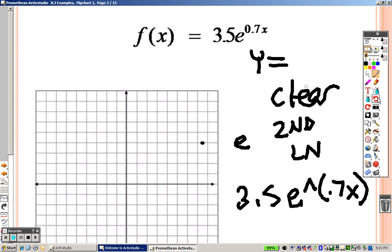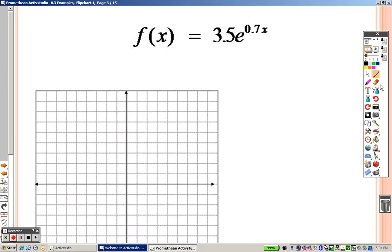So when we type that in, we go to graph, and the graph that I get looks like this. Now we can find the exacts of that graph by pressing second graph, and we have a list.